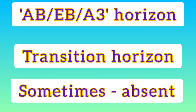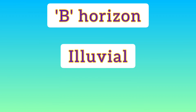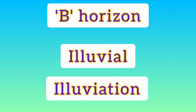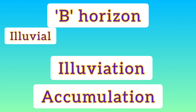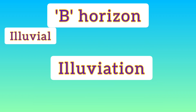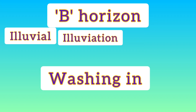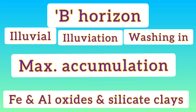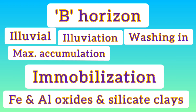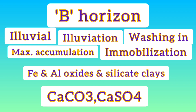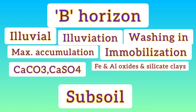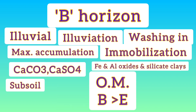Moving on to the B horizon, which is known as the illuvial horizon. Illuviation is the process where minerals are transported to this horizon from the A horizon. If A was the washing-out zone with maximum leaching, then B is the washing-in zone where maximum accumulation of materials takes place — immobilization of aluminium and iron oxides, silicate clays, and deposition of calcium carbonate, calcium sulfate, and other salts. This horizon is sometimes referred to as the subsoil. The organic matter content here is higher than that of the E horizon, but this layer cannot be cultivated by tillage operations.